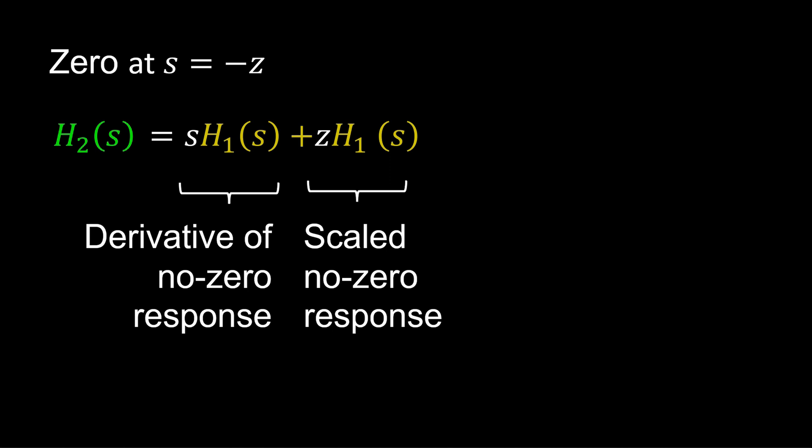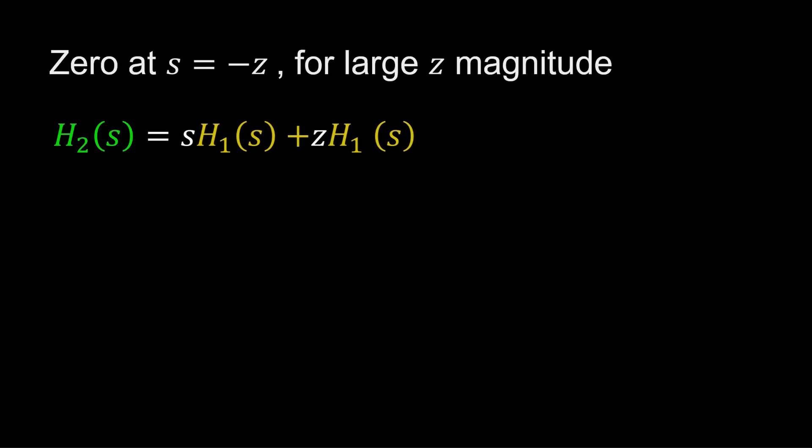Now consider how H2 behavior changes as Z changes. As the magnitude of Z gets large, the scaled no zero response dominates.